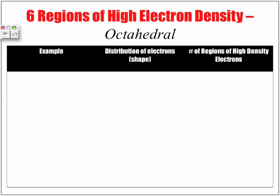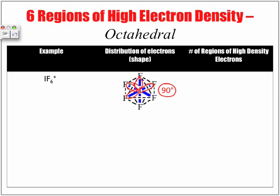Lastly, the six regions of high electron density — this is what we call the octahedral shape. For example, IF6 with a positive one charge: iodine is the central atom, and each fluoride is at a 90-degree angle apart from one another. We have six bonded and zero unshared pairs, which gives us the octahedral shape.